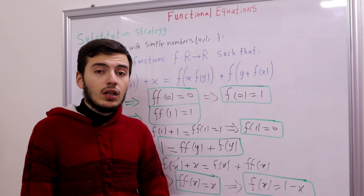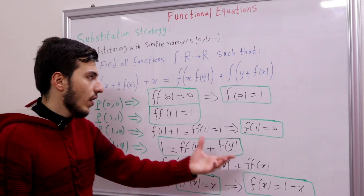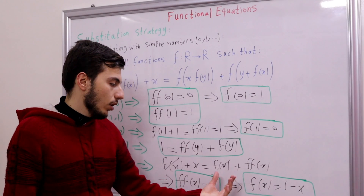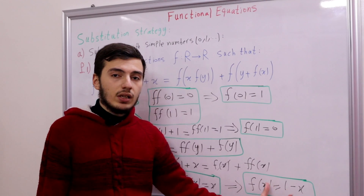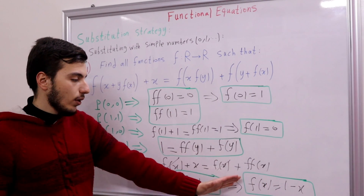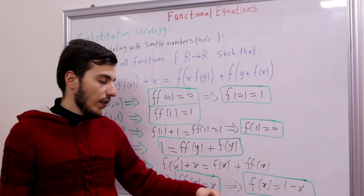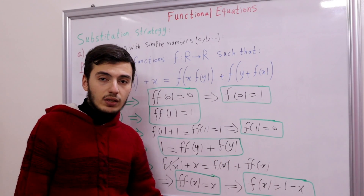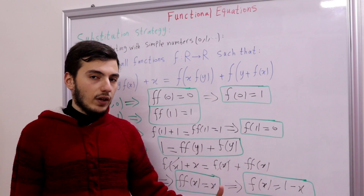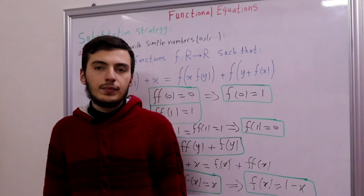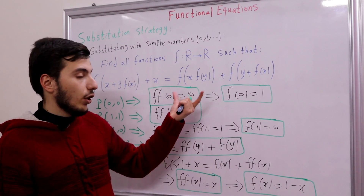But wait — we've forgotten one important step: we must check that our function f satisfies the original functional equation. We need to substitute 1 - x in every position of f(x), expand everything, and verify whether the equation holds. If it does, we're done and have the right solution. If it doesn't, we conclude there is no such function satisfying the equation. I'll leave this verification task to you!